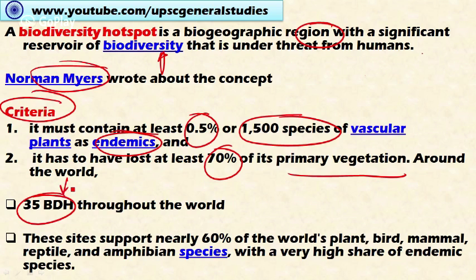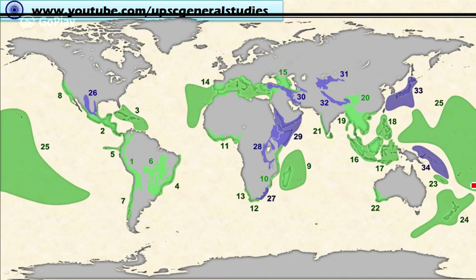These 35 hotspot regions are facing threat from human interferences. The specialty of biodiversity hotspots is that these sites support nearly 60 percent of the world's plant, bird, mammal, reptile, and amphibian species. So only 35 biodiversity hotspots support 60 percent of various organisms, with a very high share of endemic species unique to those particular areas.